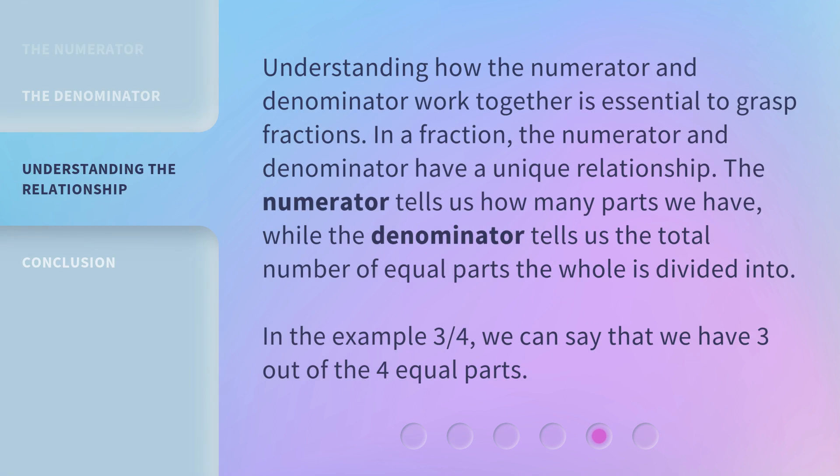Understanding how the numerator and denominator work together is essential to grasp fractions. In a fraction, the numerator and denominator have a unique relationship. The numerator tells us how many parts we have, while the denominator tells us the total number of equal parts the whole is divided into. In the example three-quarters, we can say that we have three out of the four equal parts.